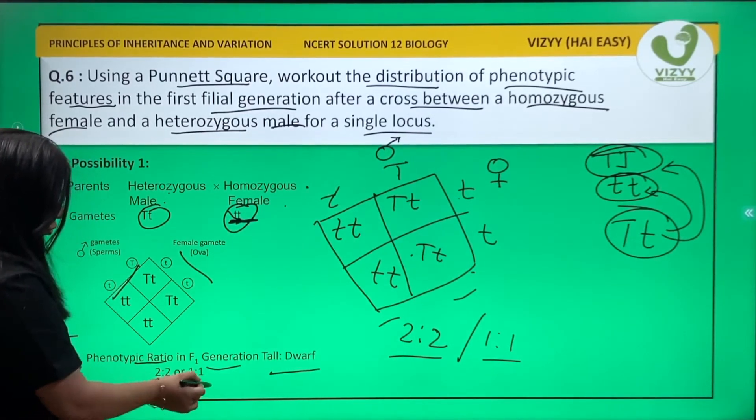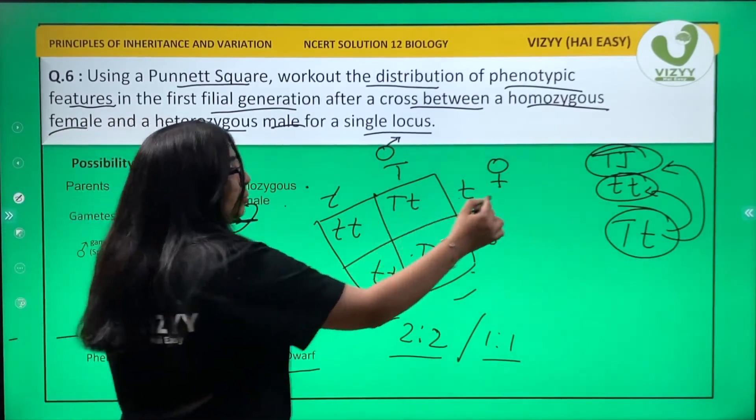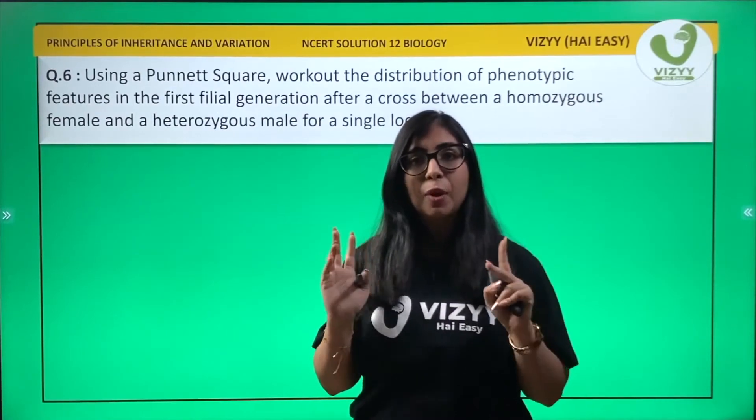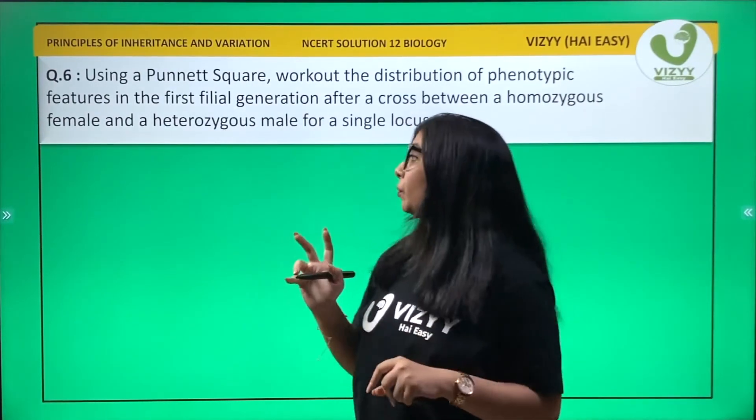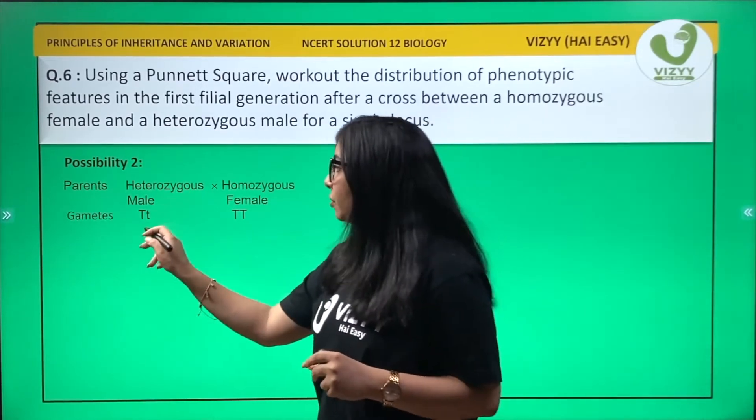Now going ahead with possibility 2. Possibility 2 is when a heterozygous male is crossed with a homozygous female. In this case, the female is homozygous tall.